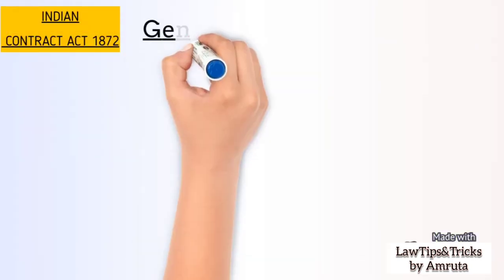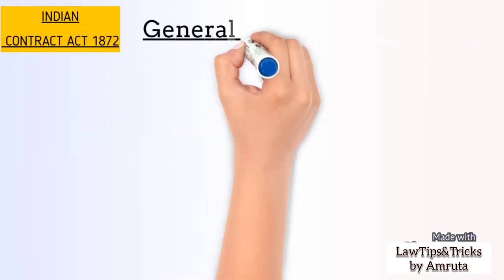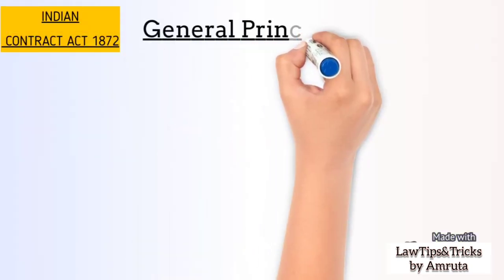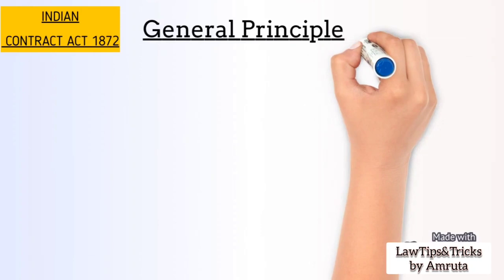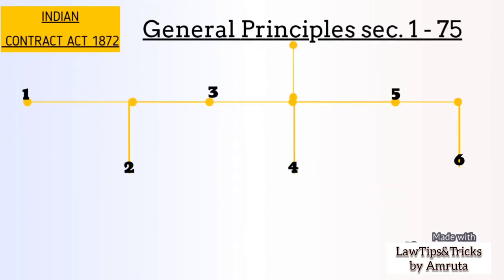Let's see about General Principles. It is divided into six chapters. As we all know, every topic has a preliminary part. So here the preliminary part has two sections — section 1 and section 2.